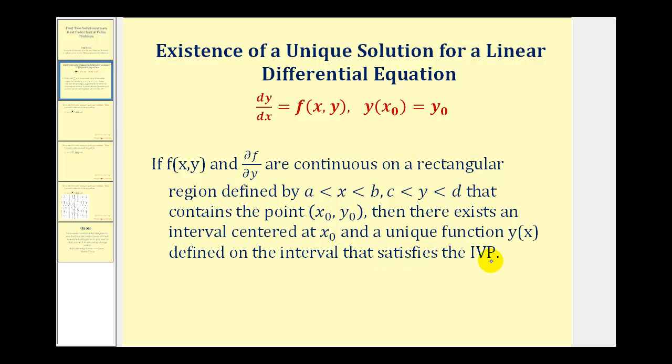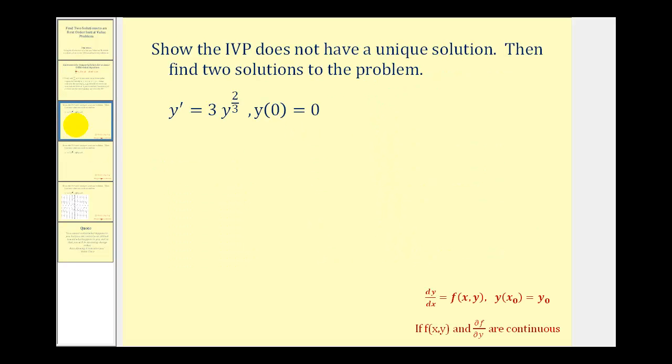Now we're going to look at the case where we have a point that is not in this rectangular region and then find two solutions to the initial value problem. We want to show the initial value problem does not have a unique solution given this initial condition, and then we'll find two solutions to the problem. We'll start by finding the region on which we would have unique solutions and then see where that compares to this point here, the point (0, 0).